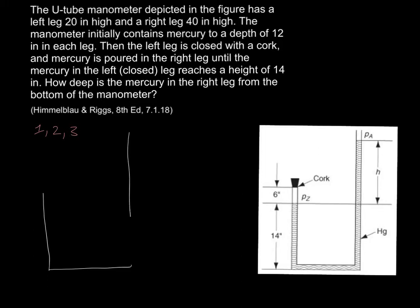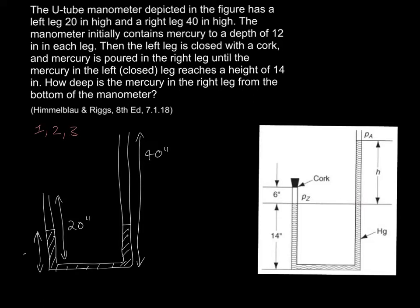We are told that the properties of this manometer are that the one leg is 40 inches high, the other leg is 20 inches high and that initially there is mercury to a depth of 12 inches. Obviously these levels will equalize when the system is open. So this initial height here is 12 inches.